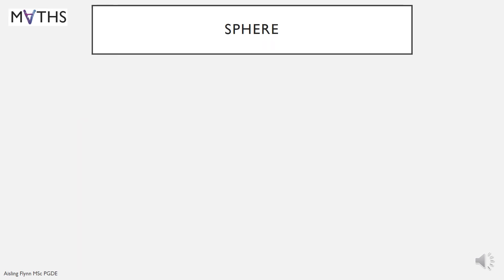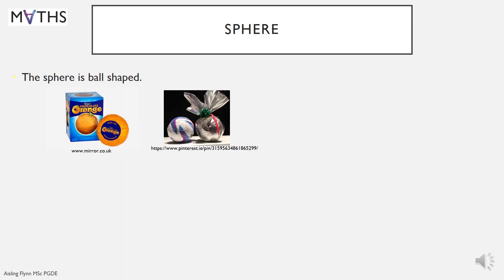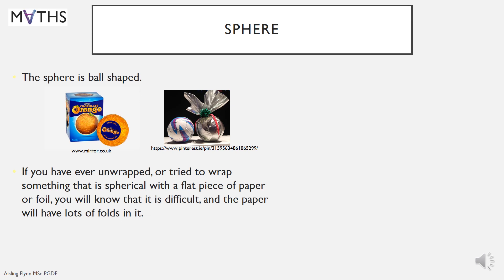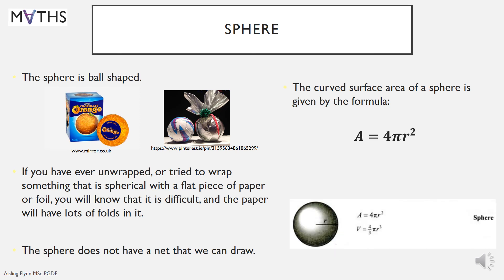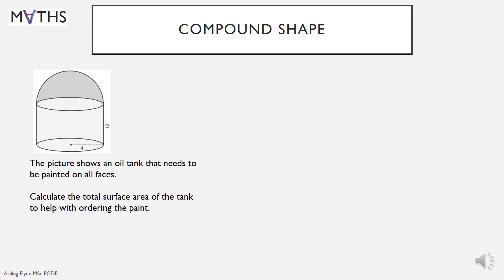And finally, we have a sphere. A sphere is ball shaped. If you have ever unwrapped your Terry's chocolate orange or tried to wrap, like a football, something that is spherical with a flat piece of paper or foil, you will know that it is difficult and the paper will have lots of folds in it. So the sphere does not have a net that we can draw. The curved surface area of a sphere is given by the formula A equals 4 pi r squared. And again, that's found in your formula book whenever you need it.